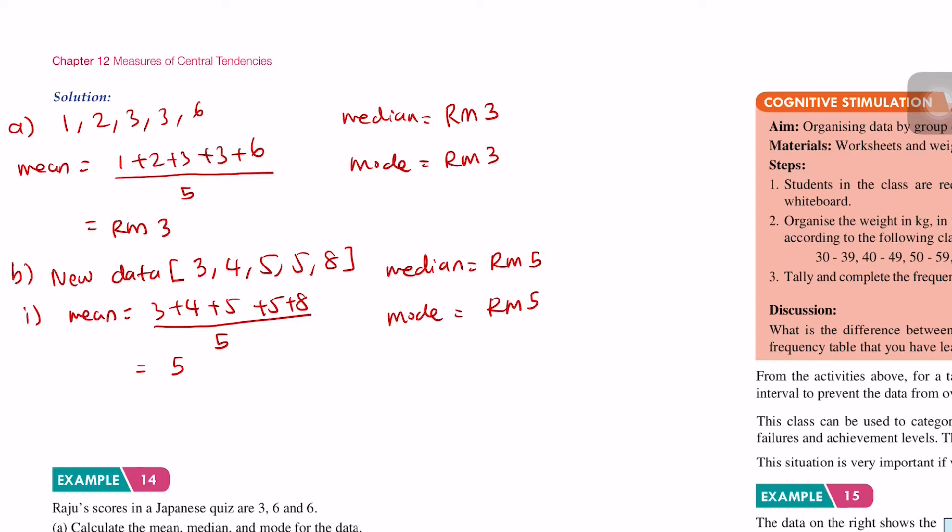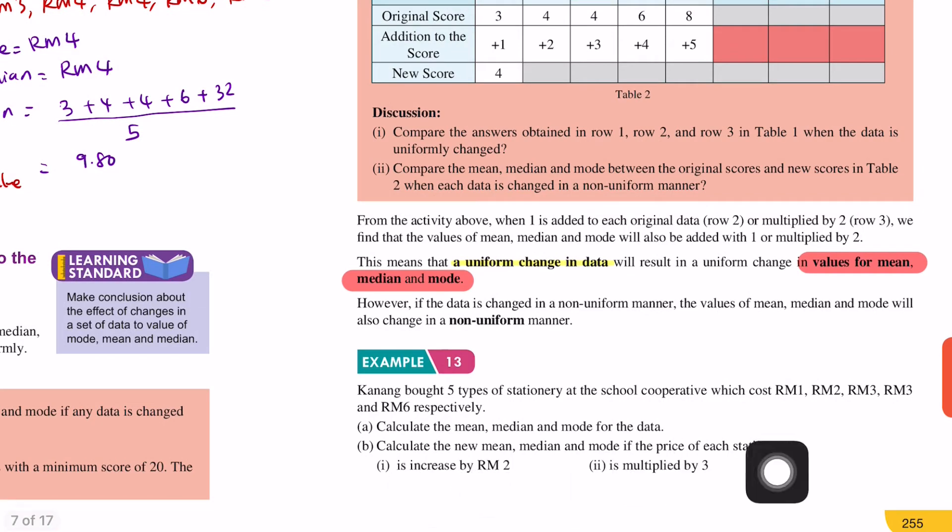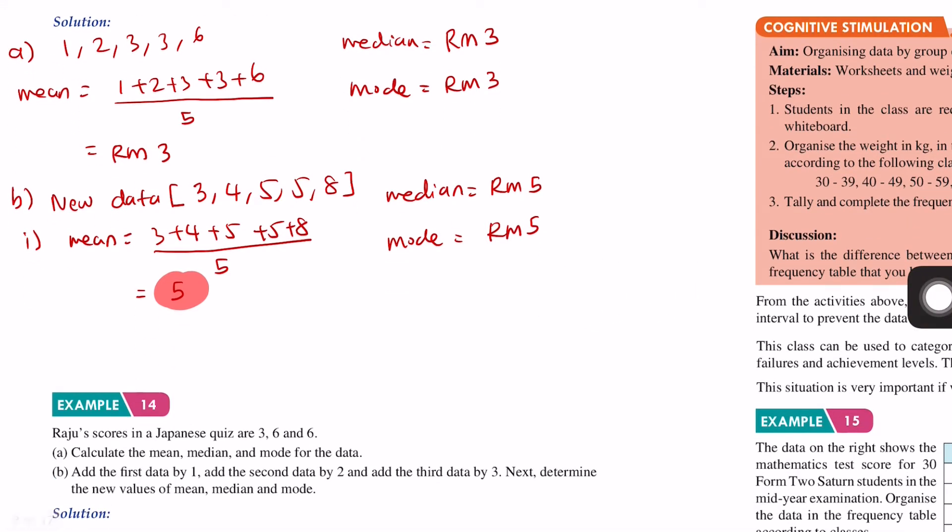When the original data is increased by 2 ringgit, the new mean also increases by 2 (from 3 to 5). The same goes for the median - the original was 3, increased by 2 becomes 5. Mode also: RM3 plus 2 equals RM5. See the pattern?